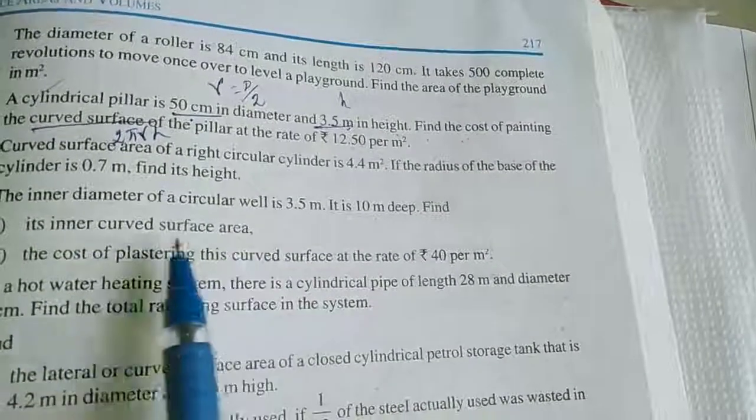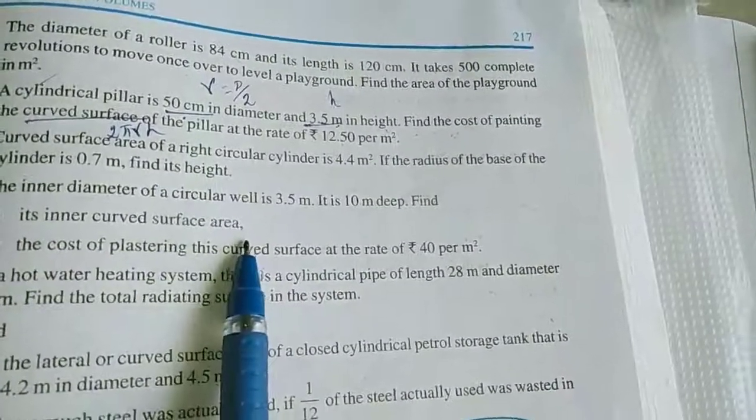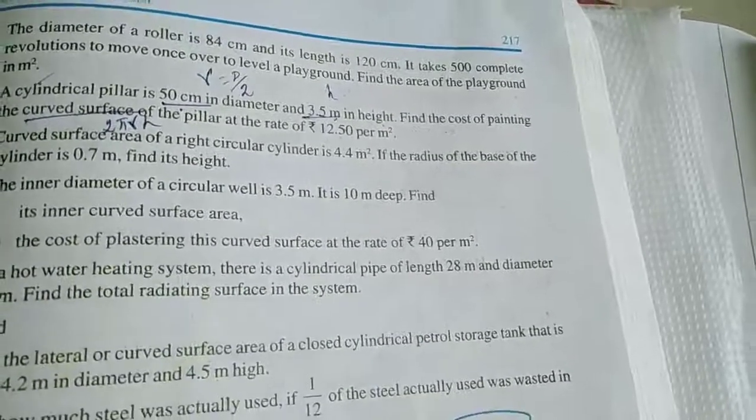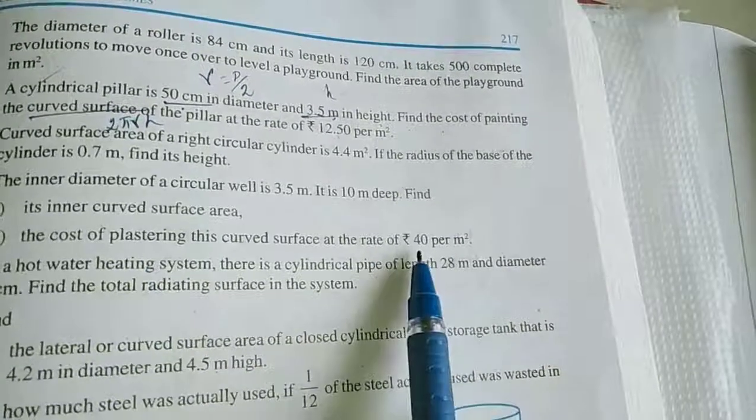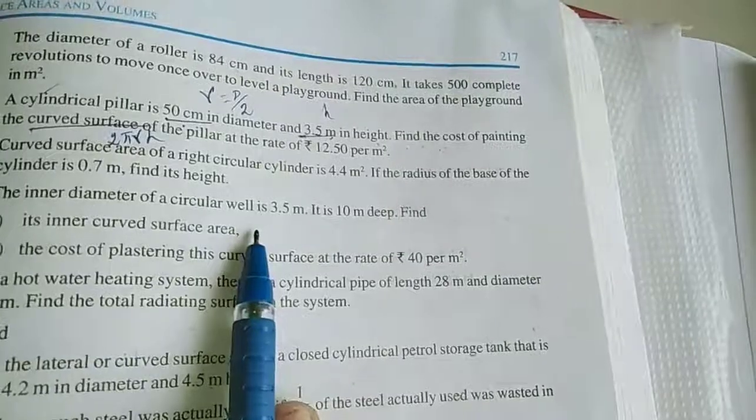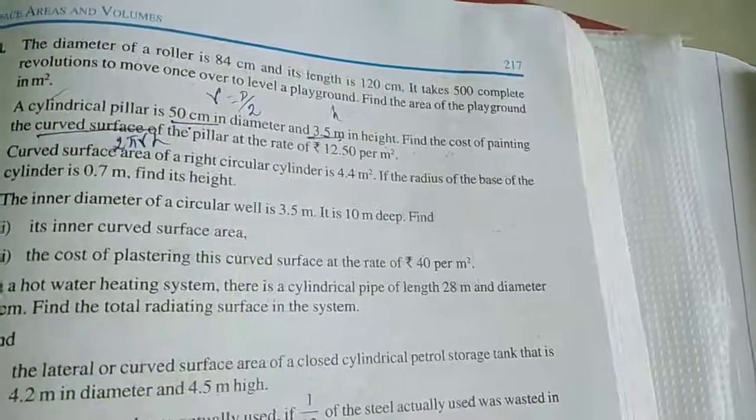First, the inner curved surface area. Next, the cost. Plastering is 40 rupees. Now we will work out.